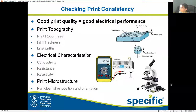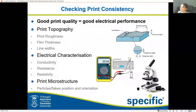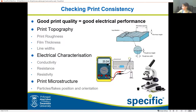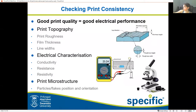What we can do is check for print consistency. A good print quality is normally nice and continuous without lots of holes in it and areas where it can short. A good print quality will give us good electrical performance. We can check this by print roughness and film thickness. We can also do electrical characterization — use a multimeter or source meter — as well as look at the microstructure to understand what our carbon flakes are actually doing.